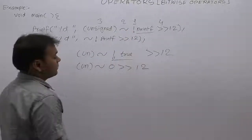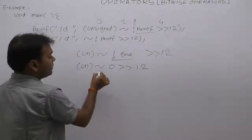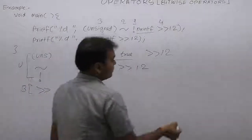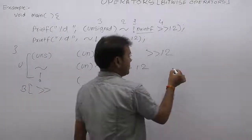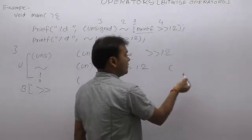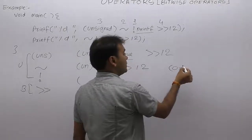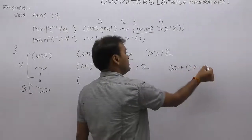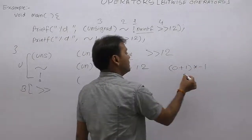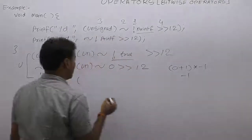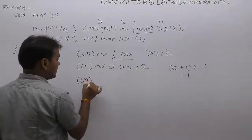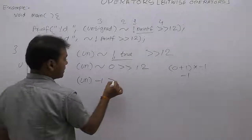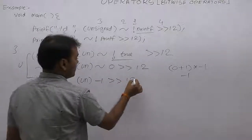After applying NOT, the result is false, meaning zero, with right shift by 12 still pending. Next, the second priority is ones complement. What is the ones complement of zero? Using the shortcut: ones complement of any number is equivalent to -(number + 1), which equals -1. Therefore, ones complement of zero is -1. So after complement, we have -1, right shift by 12.